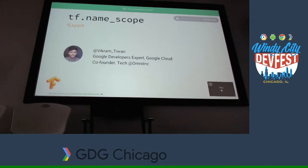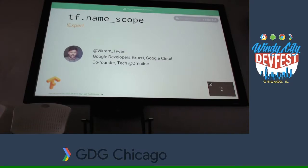My name is Vikram. I am co-founder of Omni Labs, a company in San Francisco. We do marketing data analytics, and based on that we provide suggestions on how you should move your budget to our marketers. I'm also a Google Developer Expert on Google Cloud, so if you have any cloud-based questions, go for it — I can hopefully answer all of those, or I'll direct you to somebody who can.